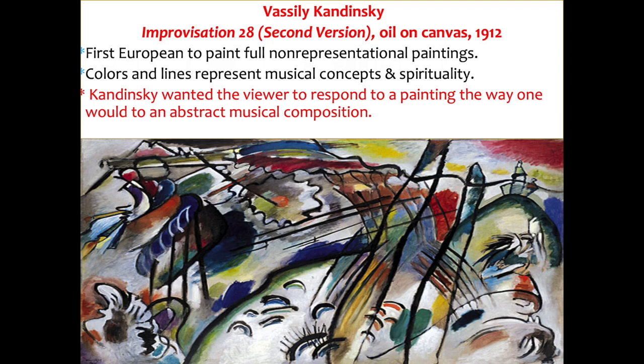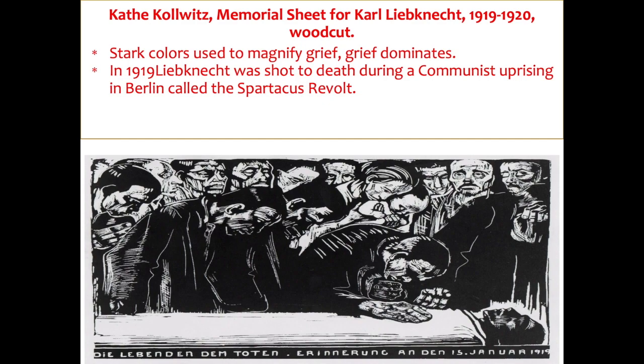The next German Expressionist is Wassily Kandinsky. This is called Improvisation 28 (Second Version), oil on canvas from 1912. He was the first European to paint completely non-representational paintings — his colors and lines represent music, concepts, and spirituality. Kandinsky wanted the viewer to respond to a painting the way a person responds to music: you can't see the notes but you hear them. Here you see the painting and it's meant to give you a feeling, almost a whimsical quality of notes flying through the air.